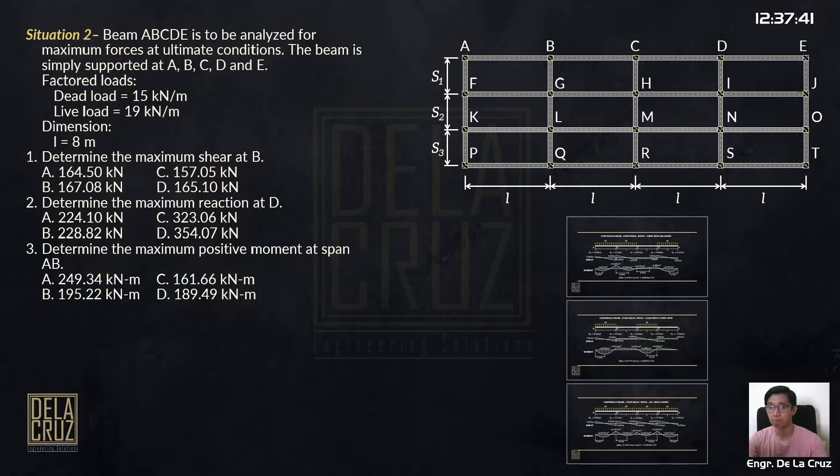Okay, so another situation. The beam ABCDE is to be analyzed for maximum forces at ultimate conditions. The beam is simply supported at A, B, C, D, and E. Given factored loads - these are factored already, hindi na natin kailangan applyan ng load combination - factored dead load is 15 kN per meter and the factored live load is 19 kN per meter.